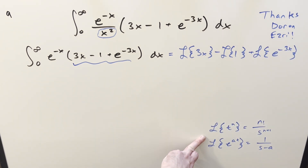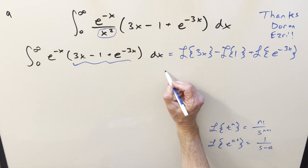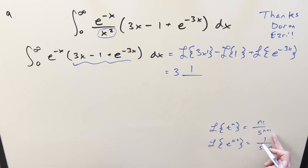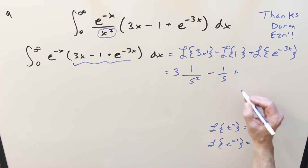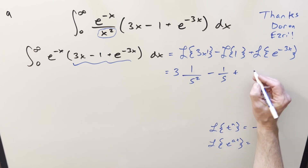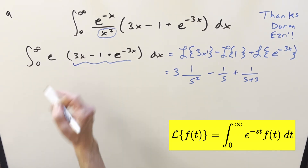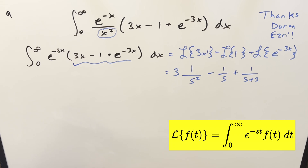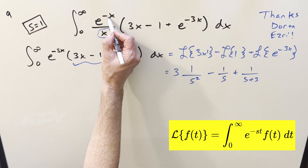For each of these, we've got formulas we can use. The constant 3 comes out front, and viewing x as x^1, we get 3·1!/s² = 3/s². For the Laplace transform of 1, using n=0, we get 1/s. For e^(-3x), with a = -3, we get 1/(s+3). To make this a proper Laplace transform we need e^(-sx), and we'll set s = 1 at the end so we're not changing the original problem.